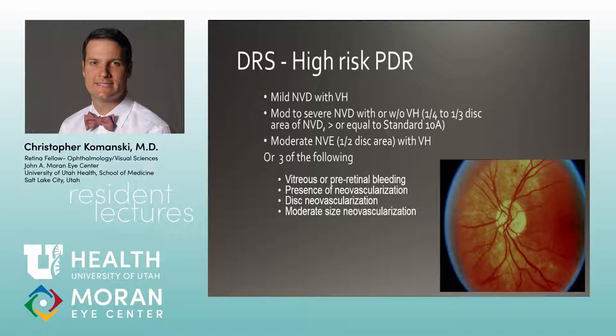Notably, the DRS used both Argon blue-green laser and xenon photocoagulation — the xenon was actually a multi-wavelength photocoagulator, not a true laser, with massive spots the size of the disc or bigger. Patients required a retrobulbar block because it was very painful. The Argon laser was relatively new at the time. It's impressive how far we've come in the 70 years since.